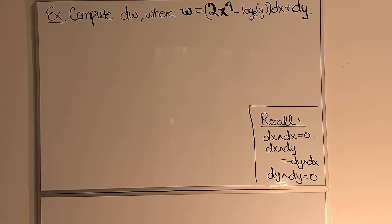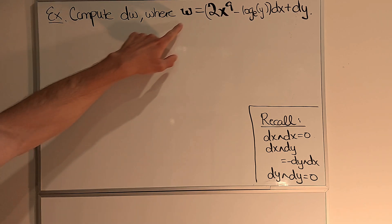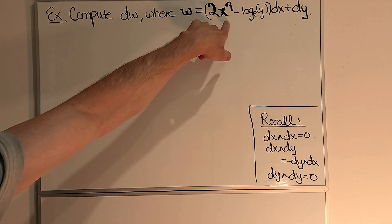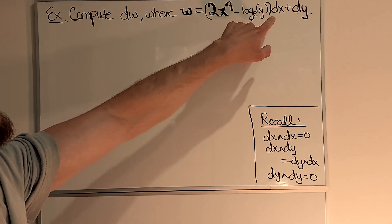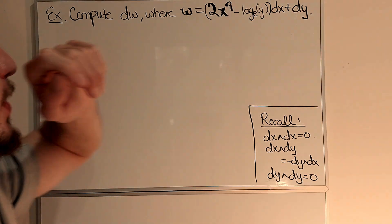So let's look at this example of computing the exterior derivative of the one-form omega, where omega is 2x to the 9 minus log ey dx plus dy.